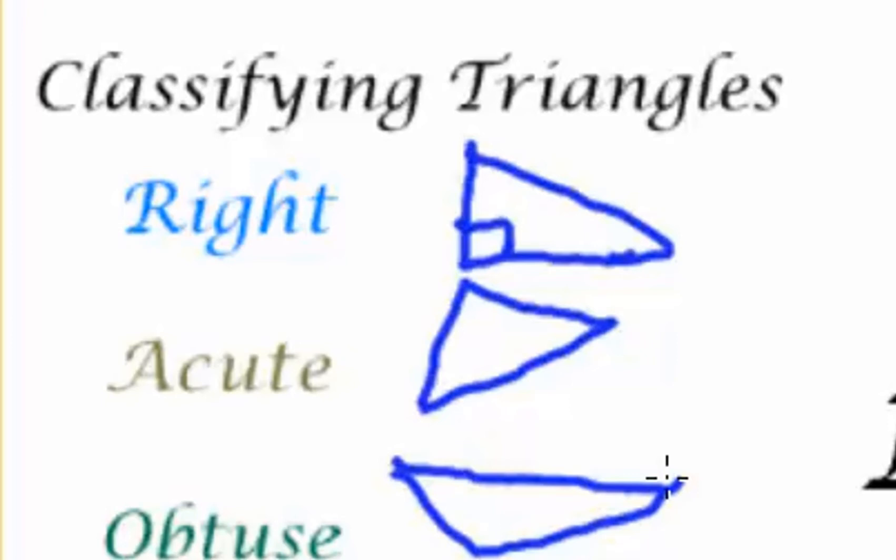Considering all these characteristics of the angles and the sides, let's go ahead and practice naming some of these triangles. So let's say that I start off with a triangle like this. It's got a right angle up top, two sides that are six. What would I call this?